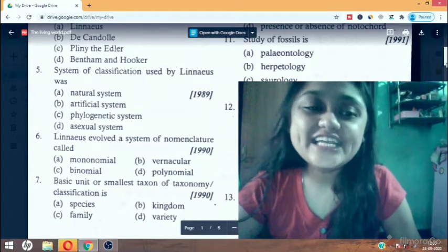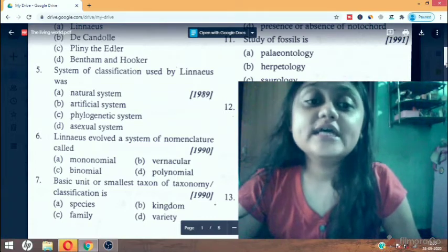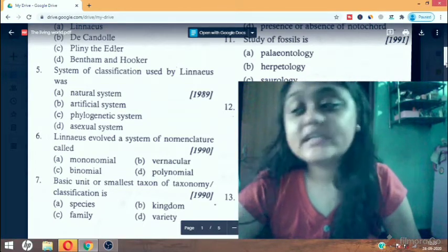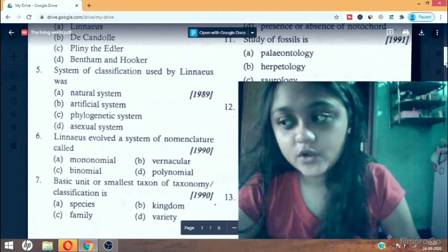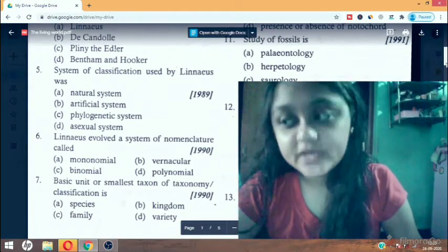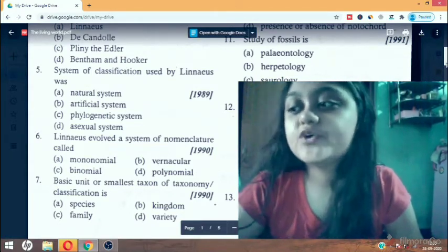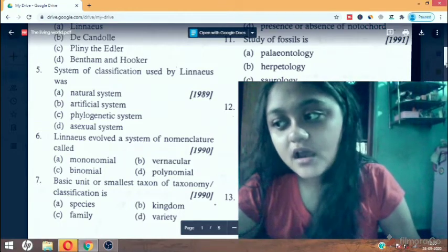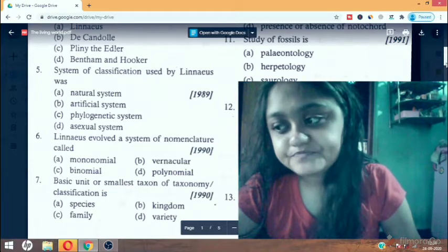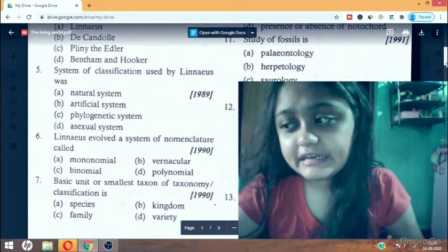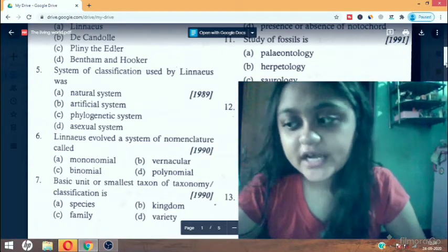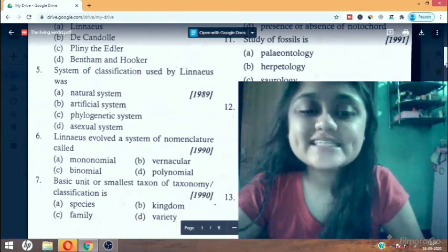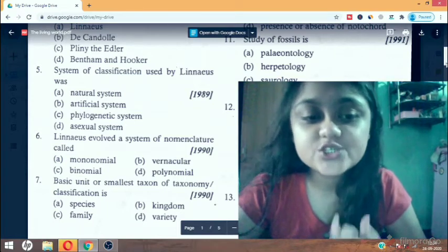Sixth question: Linnaeus evolved a system of nomenclature called. The answer is binomial. The first scientific attempt to name the organism was polynomial nomenclature which consists of number of words. To overcome this, binomial nomenclature came.